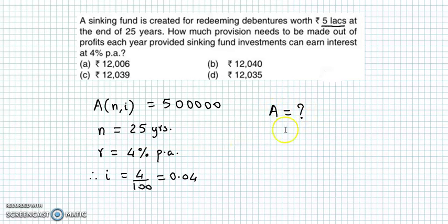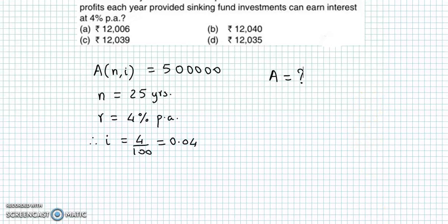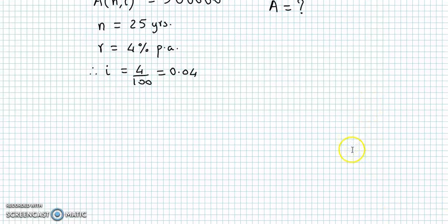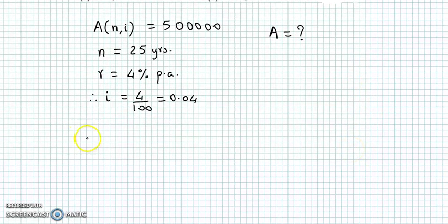We will use the accumulated value formula for sinking fund. We have A(n,i) is equal to A upon i into 1 plus i raised to n minus 1.